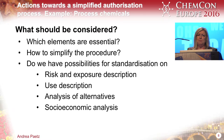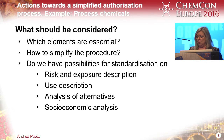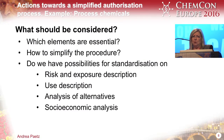We have three parts of the authorization process: the risk and exposure description — that means the CSR — the analysis of alternatives, and the socioeconomic analysis. We did it for all these parts in a very simplified way because we couldn't do it extensively, but we did it.